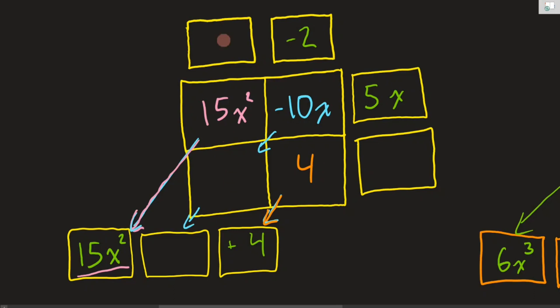So now how do I fill in these spots here? I'm going to have to start thinking backwards. Negative 2 times whatever was here should give me 4. So I need negative times, well this is going to have to be negative times negative to give me a positive. And 2 times 2 is 4. So this box here has to be a negative 2. And similarly, like something up here times 5x gives me 15x squared. Well, 5 times 3 is 15. And x times x is x squared. And now I should be able to fill in this final box down here. So 3x times negative 2 is negative 6x.